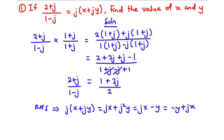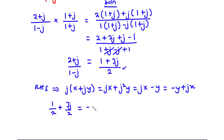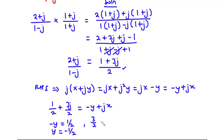Now let's compare the two expressions. We have 1/2 + (3j/2) equals negative y + jx. Comparing real parts: negative y equals 1/2, therefore y equals negative 1/2. Comparing imaginary parts: x equals 3/2. So our answers are x equals 3/2 and y equals negative 1/2.